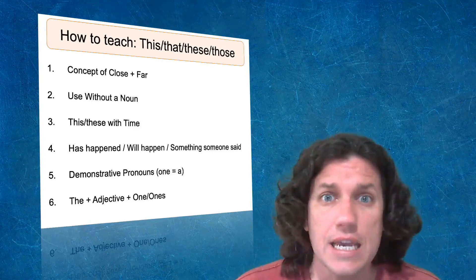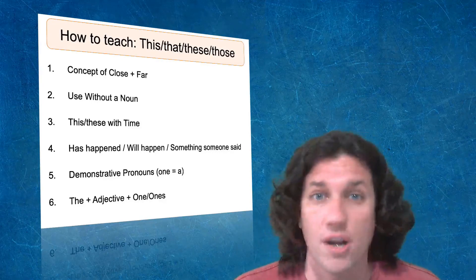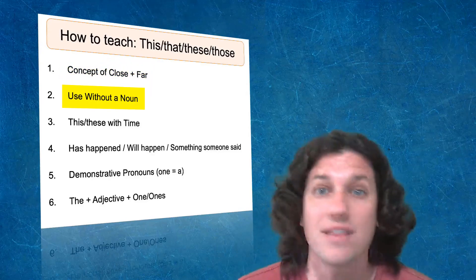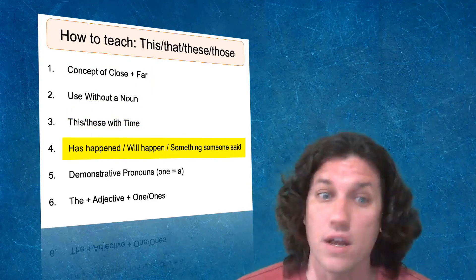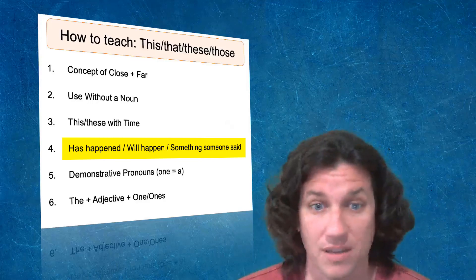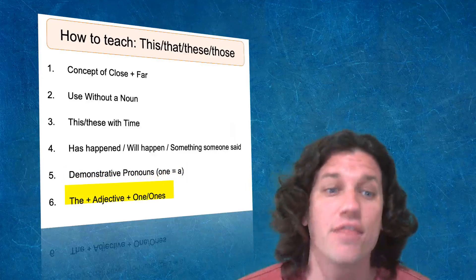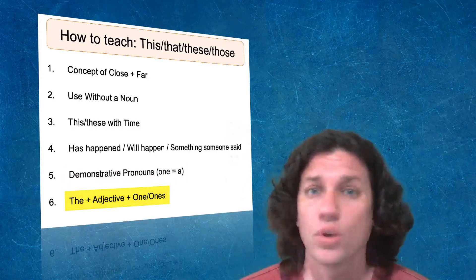So the six key concepts to how to teach this, that, these, and those are: number one, starting with the concept of close and far; using them without a noun; using this and these with time; using this or that has happened or will happen or with something someone said; using demonstrative pronouns; and the plus adjective plus one or ones. So let's get started.